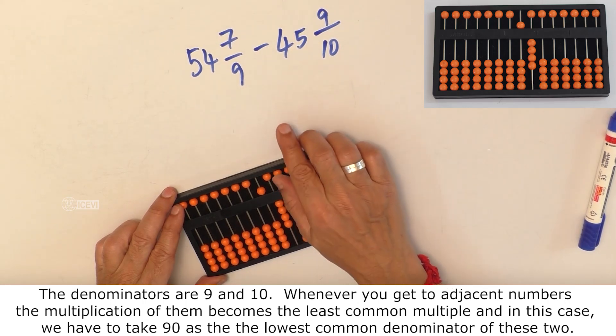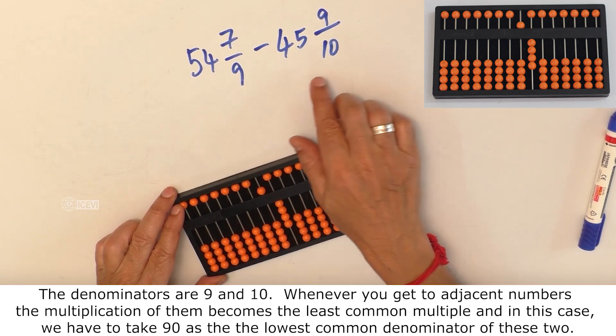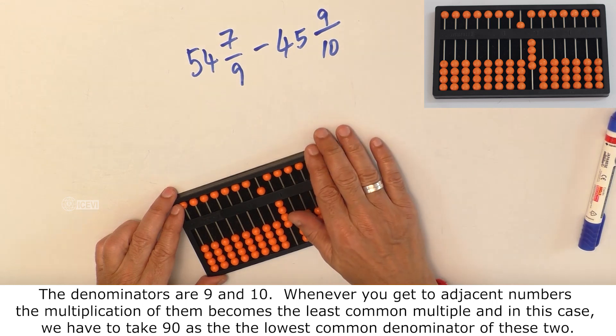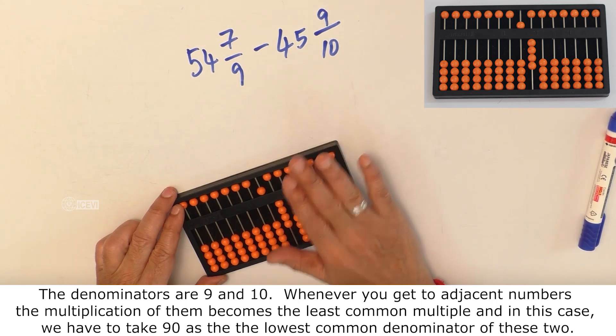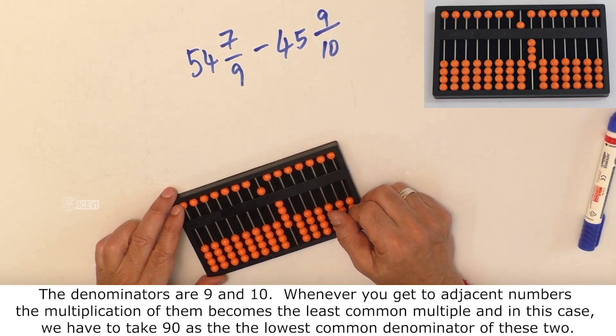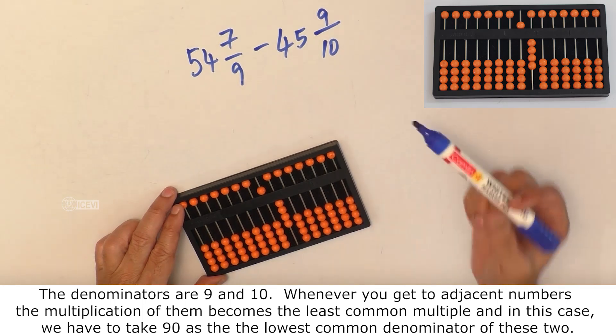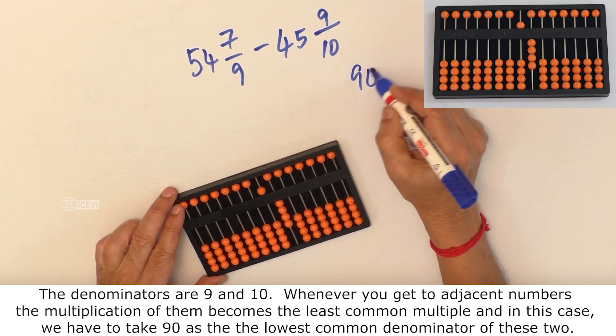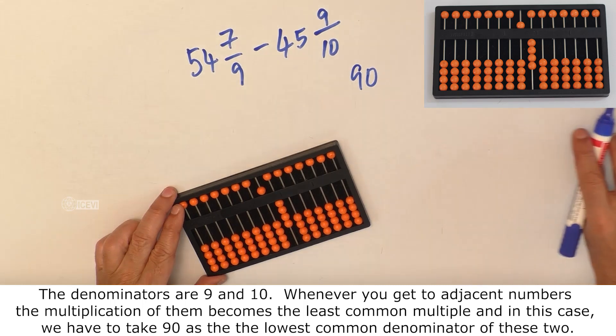The denominators of the two fractions are 9 and 10. Whenever you get two adjacent numbers, the multiplication of them becomes the least common multiple. In this case, we have to take 90 as the lowest common denominator of these two.